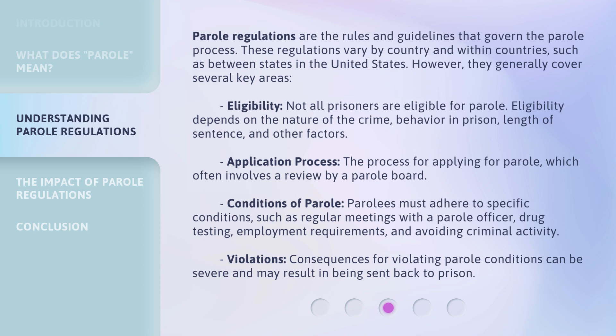Application process: the process for applying for parole, which often involves a review by a parole board. Conditions of parole: parolees must adhere to specific conditions, such as regular meetings with a parole officer, drug testing, employment requirements, and avoiding criminal activity. Violations: consequences for violating parole conditions can be severe and may result in being sent back to prison.